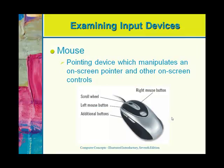Your mouse is a pointing device that manipulates an actual pointer on the screen. There are actually several choices to choose from for a mouse, but typically they all look the same like the image you see here. Today's mice typically have a scroll wheel in the middle at the very least, and then a left and a right mouse button.